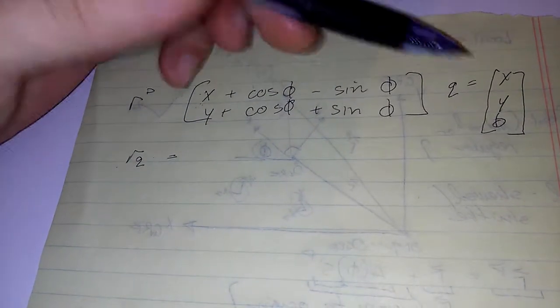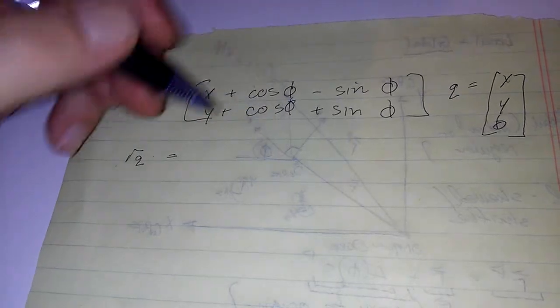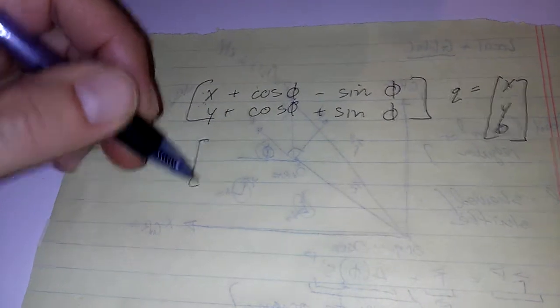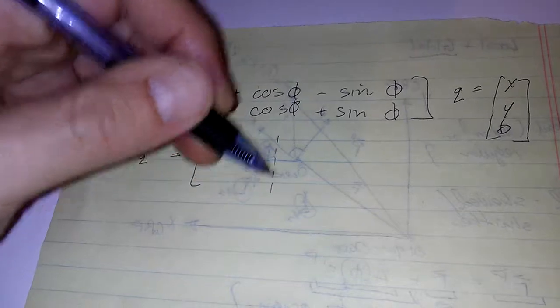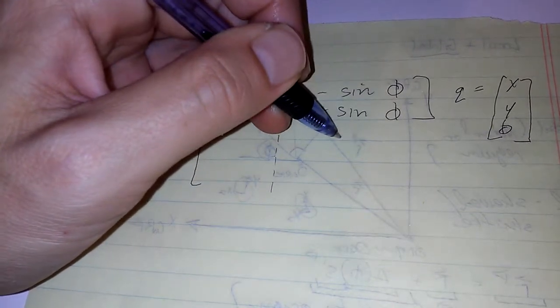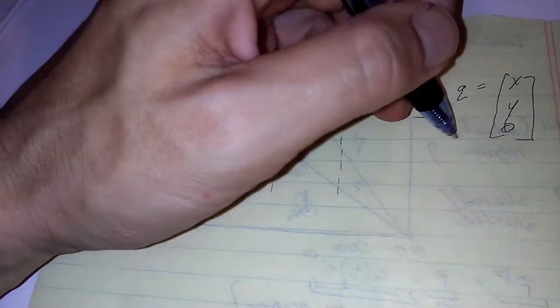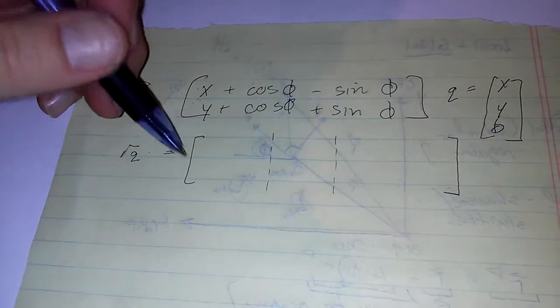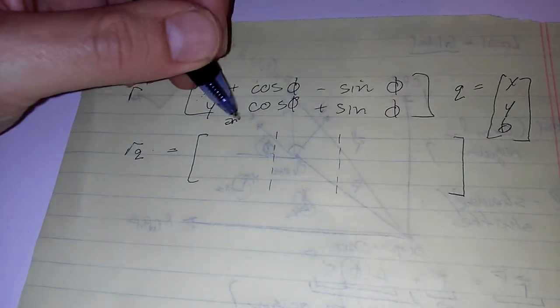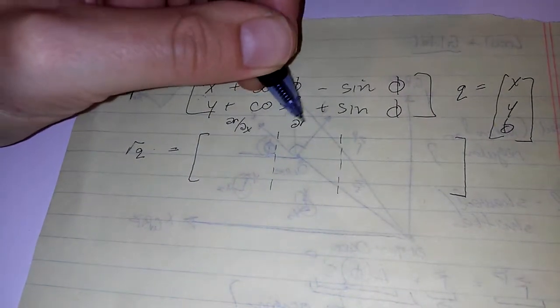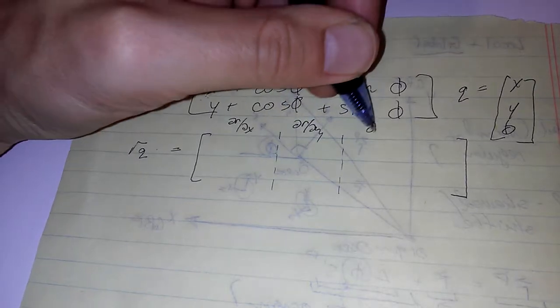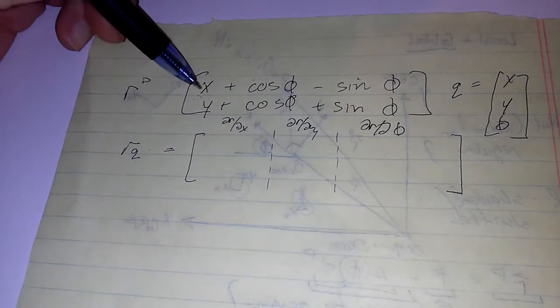So, this is going to equal, let's see, we've got two equations, we've got three variables. This is going to be a 2 by 3. So, let's go like that. And then, I know the phi one's going to be the longest term. Let's go like that. So, we have dr/dx, dr/dy, and dr/d phi.